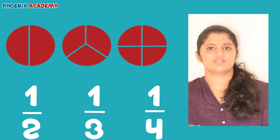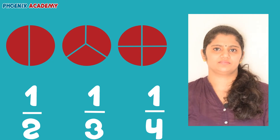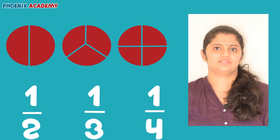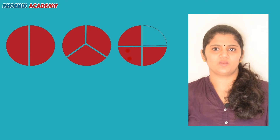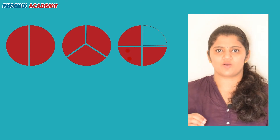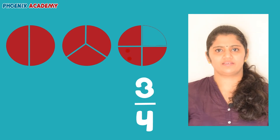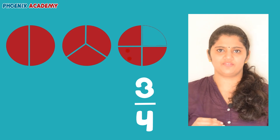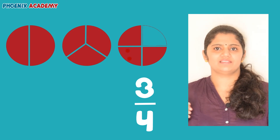One fourth is also called a quarter. Now let's see what is three fourth. Three out of the four equal parts is called three fourth or three quarters. Three fourth is written like this.